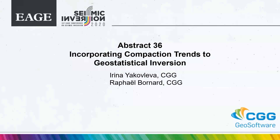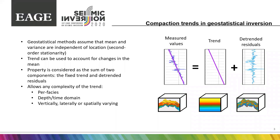Hello, my name is Irina Yakovleva and my co-author is Rafael Bernard. We'd like to present our work about incorporating compaction trends into statistical inversion. Geostatistical inversion methods are widely used in reservoir characterization workflows. Even though they can be applied in any geological subsurface, algorithms have some assumptions. The main one is that geostatistical methods expect the properties being modelled to be stationary, but quite often geological sections don't fit this assumption, and this needs to be handled with the introduction of depth trends in the inversion.